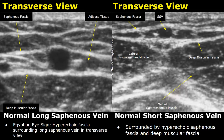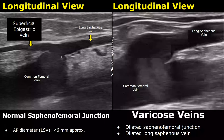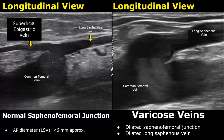Here is a longitudinal view showing the saphenofemoral junction. This right here is the superficial epigastric vein. The normal AP diameter of the long saphenous vein is usually less than six millimeters approximately. This is the long saphenous vein — it joins the common femoral vein at the saphenofemoral junction.